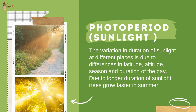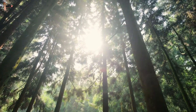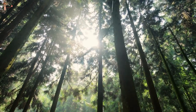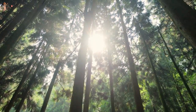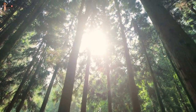The variation in duration of sunlight at different places is due to differences in latitude, altitude, season and duration of the day. Due to the longer duration of sunlight, trees grow faster in summers.